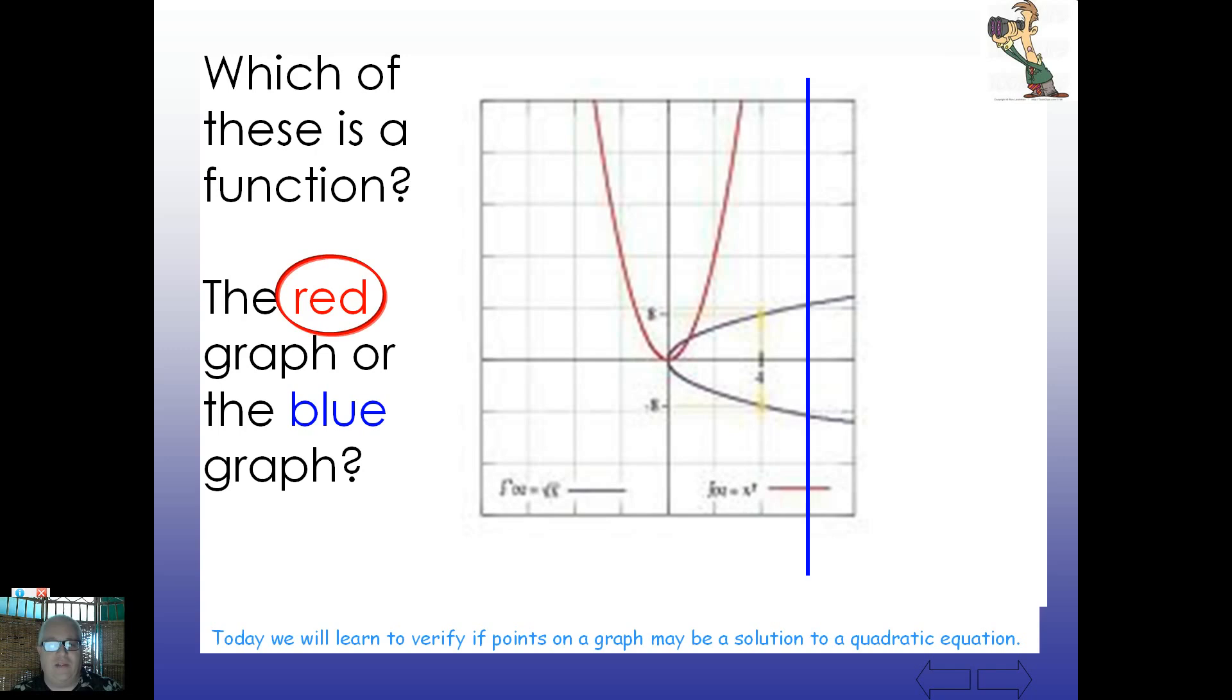So the blue is going to fail as a function. But the red indeed is a function. Because the graph only hits it at one spot. The vertical line only touches the graph at one spot I should say.